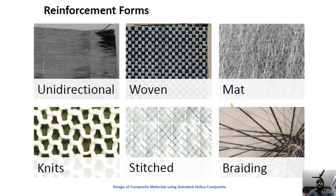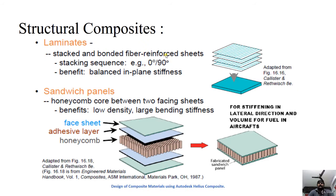Fibers can be reinforced in several forms inside the matrix: unidirectional, woven, matte, knit, stitched, and braided forms. In practice, unidirectional and woven composites are the most commonly used.